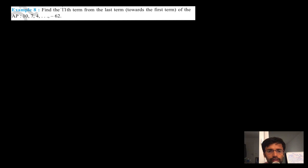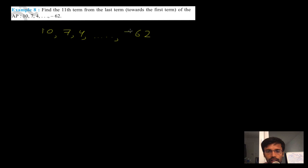The first problem says: find the 11th term from the last term towards the first term of the AP: 10, 7, 4, ... up to -62. We need to start counting from the last side and find the 11th term from there. One approach is to first find how many numbers are there in this AP.